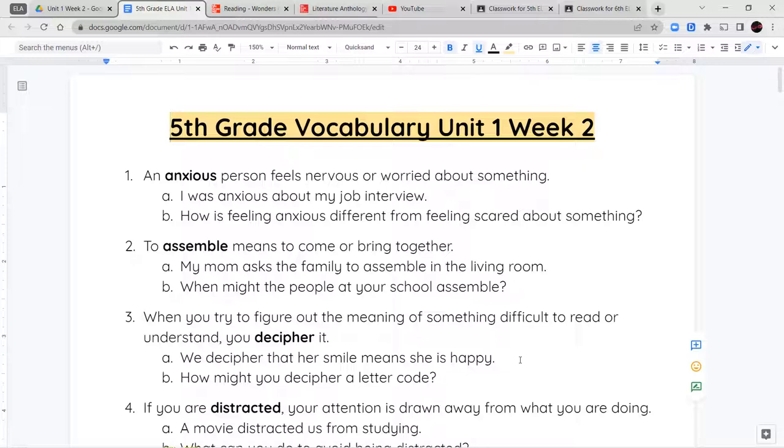Your first word is anxious. A person feels nervous or worried about something when they're anxious. So when you are anxious, you're concerned about something. It could be maybe you're anxious about taking a test or about going to a new school. An example sentence is, I was anxious about my job interview. You can use it in question form by saying, how is feeling anxious different from feeling scared about something?